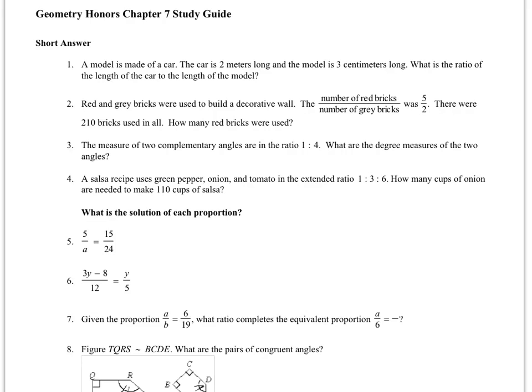For problem number 1, I'm being asked to find the ratio of the length of the car to the length of the model car. I know that when I'm making a ratio, I need to have the same units. So I'm going to change this 2 meters into 200 centimeters. Now I have 200 centimeters and 3 centimeters with the same unit. The length of my car is 200 centimeters and the length of my model is 3 centimeters. So my ratio is 200 over 3 or simply 200 colon 3.